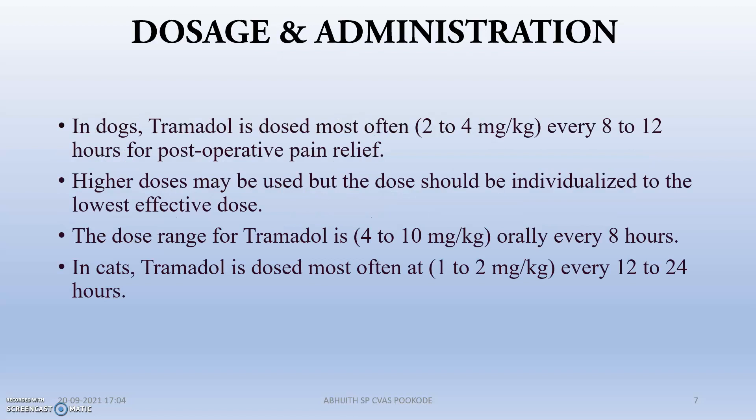Regarding dosage and administration in dogs, Tramadol is dosed most often at 2 to 4 mg per kg every 8 to 12 hours for postoperative pain relief. For higher doses when required, it is given at 4.2 to 4.8 mg per kg. When given orally, the dose is 4 to 10 mg per kg every 8 hours.